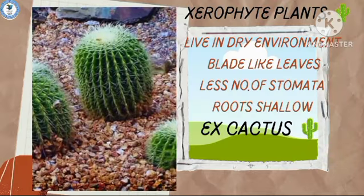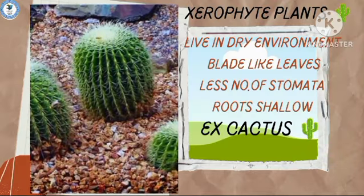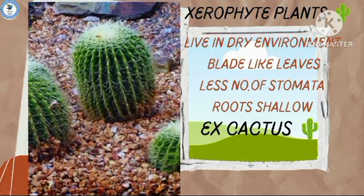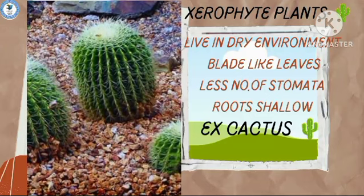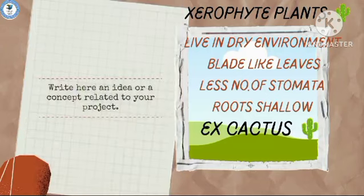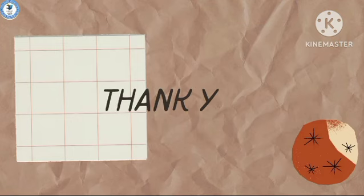Fourth are xerophyte plants. These plants grow in a dry environment. Leaves are blade-like, and they have a less number of stomata. Example: cactus. Thank you.